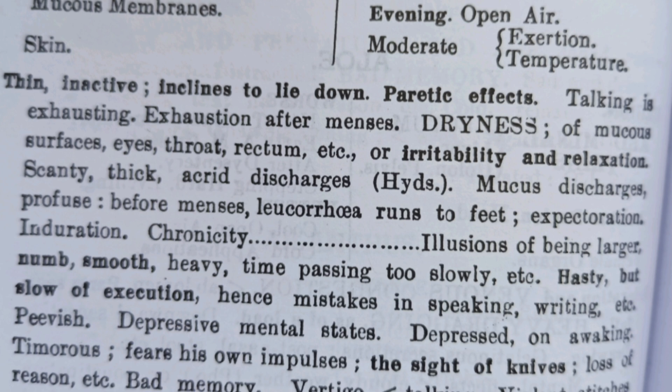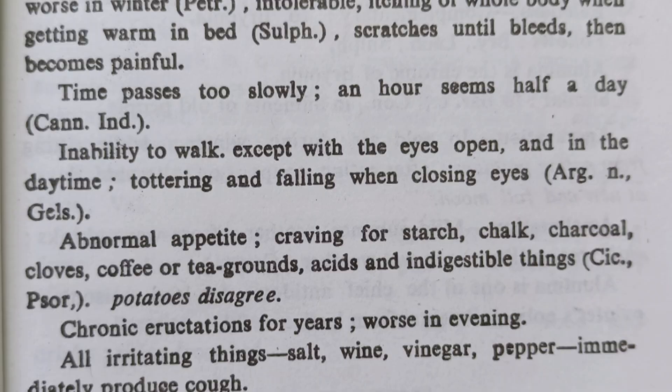Mental symptoms of Alumina: illusions of being larger, numb, smooth, heavy; time passing too slowly, etc. In Allen's Keynotes, the symptom is 'time passes too slowly and hours seem a day.' The other remedy with this symptom is Cannabis indica.